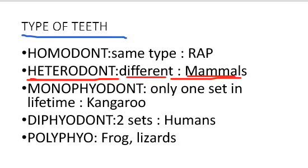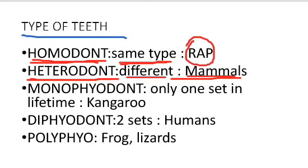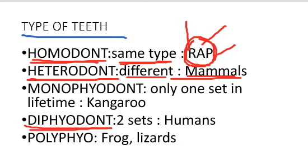For example, mammals or humans — most mammals have heterodont dentition. Just opposite to that, there is homodont dentition, in which all the teeth are of the same type. You have to memorize a word: RAP — that is Pisces, Amphibia, and Reptiles. So fishes, amphibians, and reptiles have homodont type of teeth.